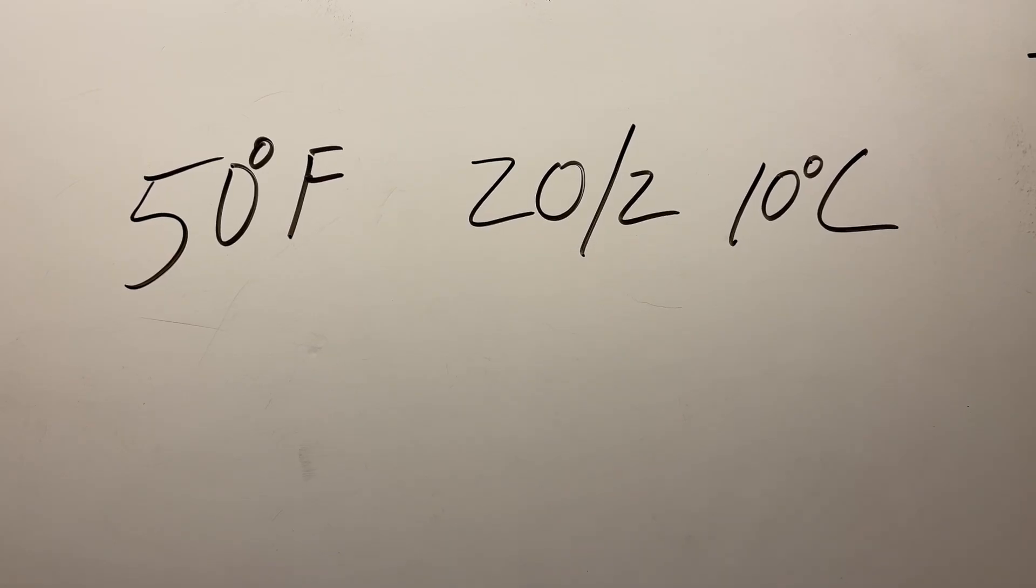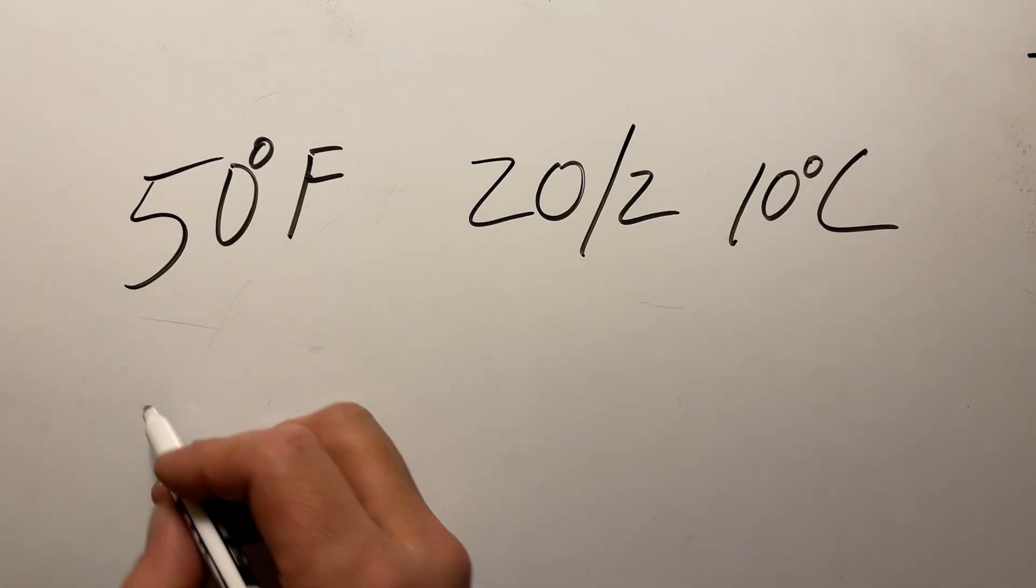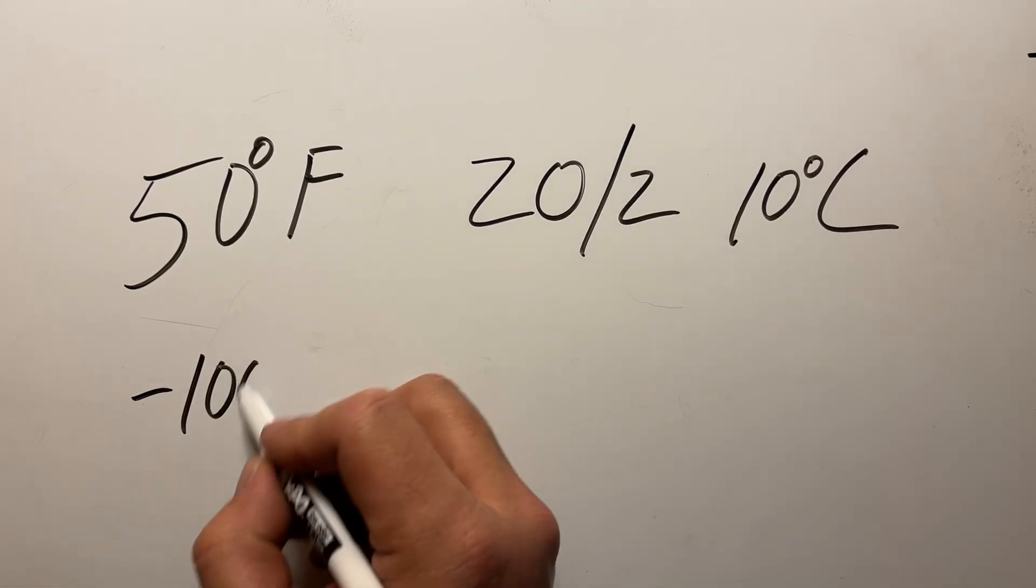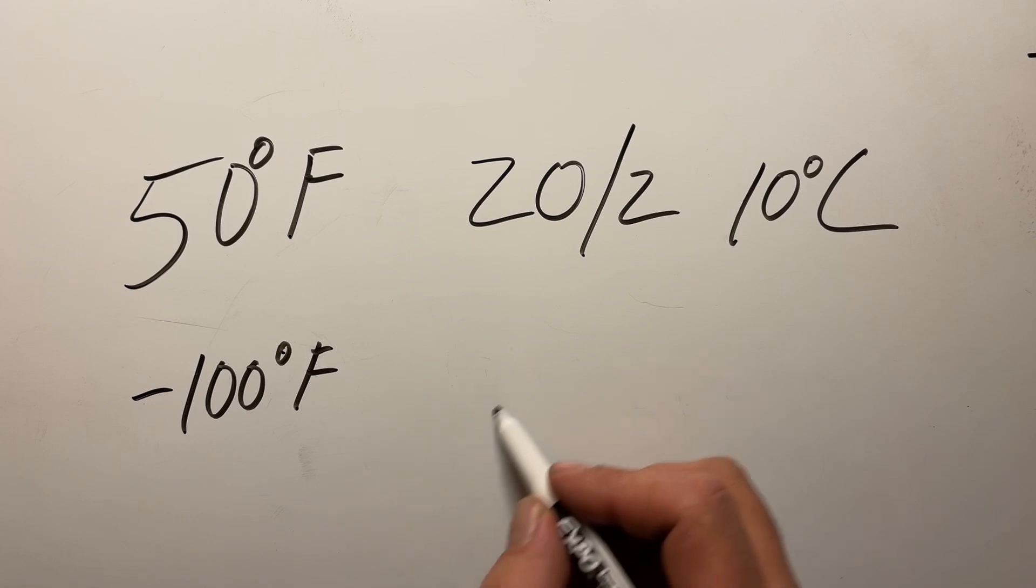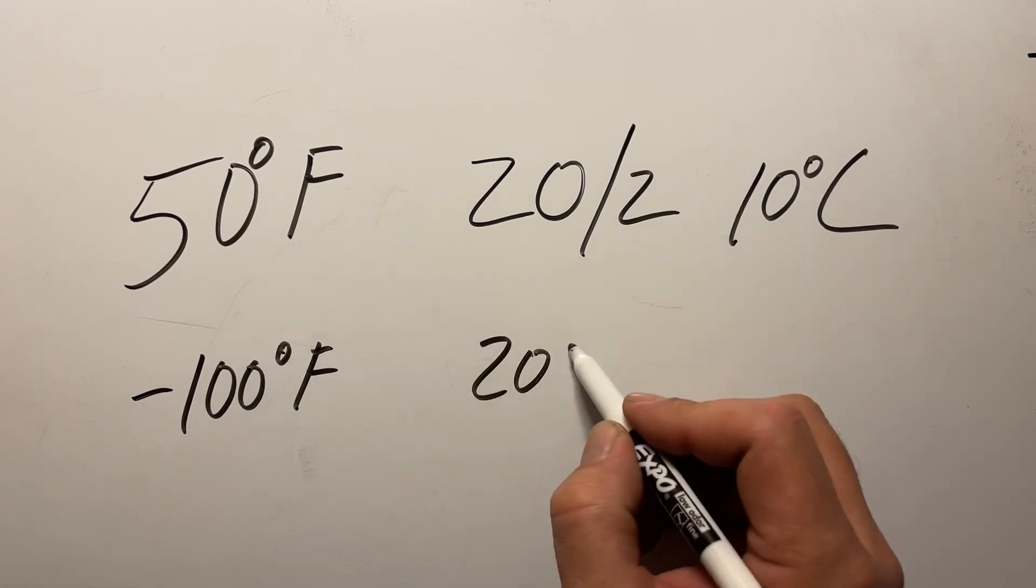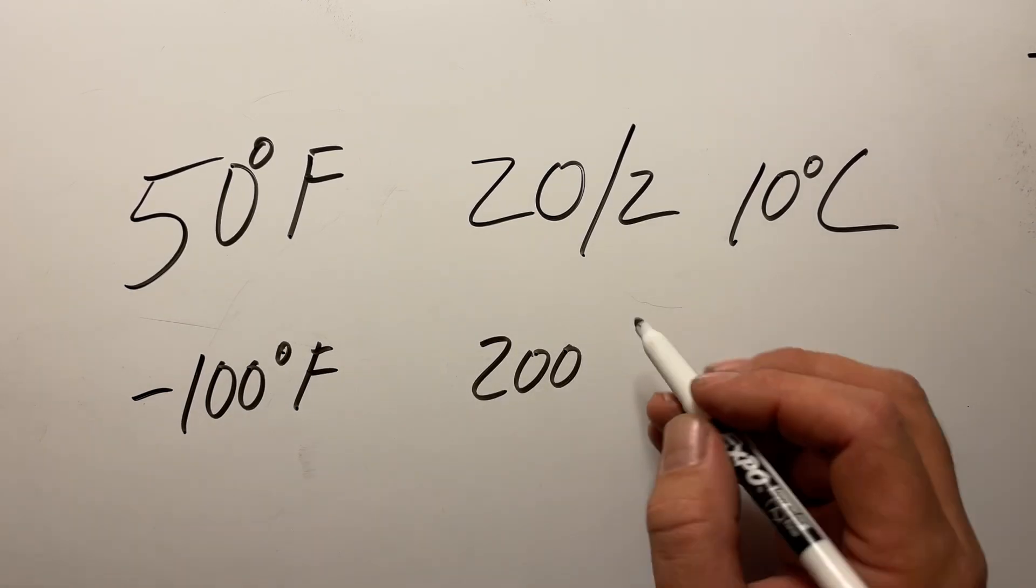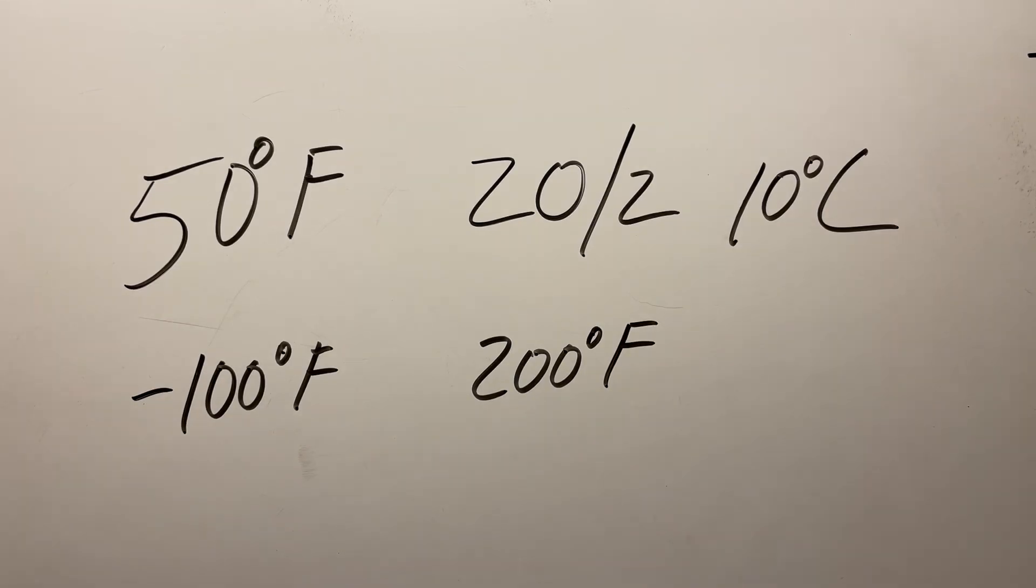So I'm going to show you an adjustment that you can make to this that will keep it accurate to within a half a degree, going from a range of about negative 100 degrees Fahrenheit all the way up to about 200 degrees Fahrenheit. So a range of about 300 degrees, and this shortcut method will be fairly accurate.